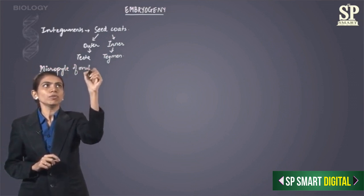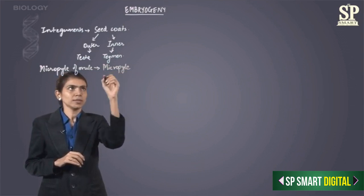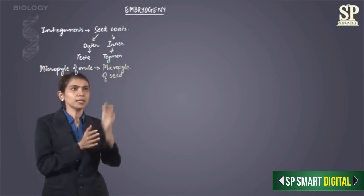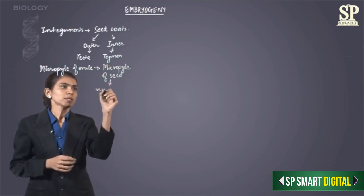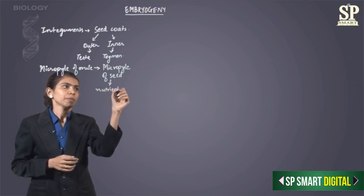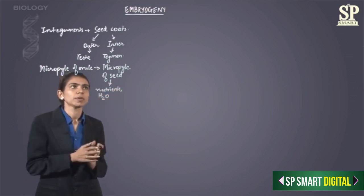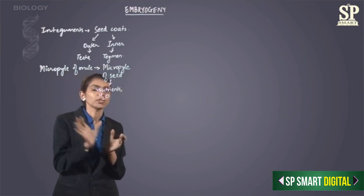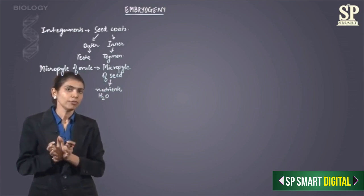The micropyle of the ovule will go on to form the micropyle of the seed — here the name doesn't change, it remains the same. Now through this micropyle of the seed, the seed absorbs nutrients and water. So the micropyle of the seed has a nutritive function.